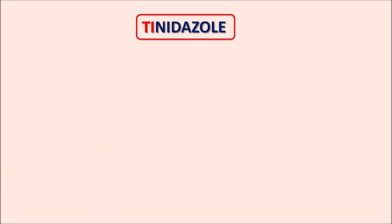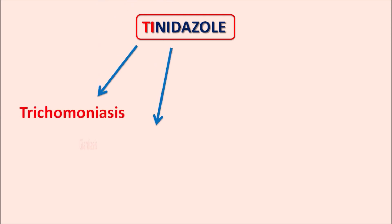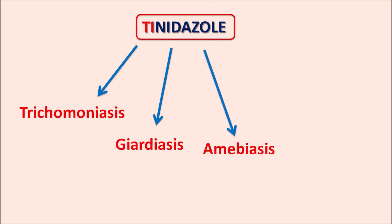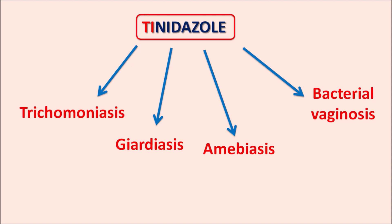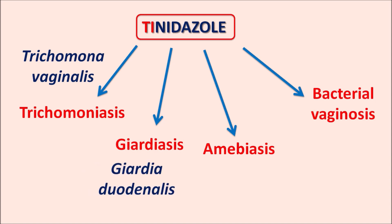Tinidazole has a broad spectrum of activity and can be used in the treatment of trichomoniasis, giardiasis, amoebiasis, and bacterial vaginosis. Trichomoniasis is caused by Trichomonas vaginalis, producing sexually transmitted disease with vaginal discharge and abdominal pain. Giardiasis is caused by Giardia duodenalis, producing diarrhea and abdominal pain. Amoebiasis is caused by Entamoeba histolytica, also producing diarrhea.